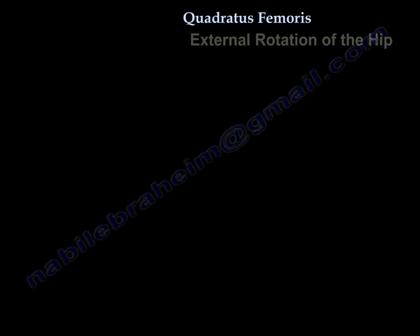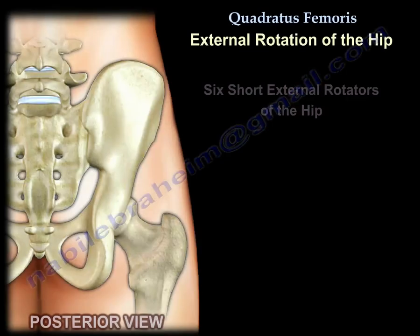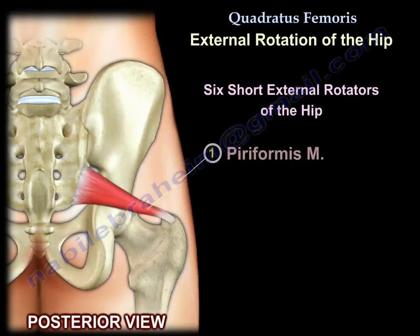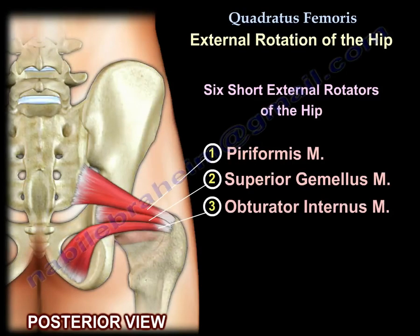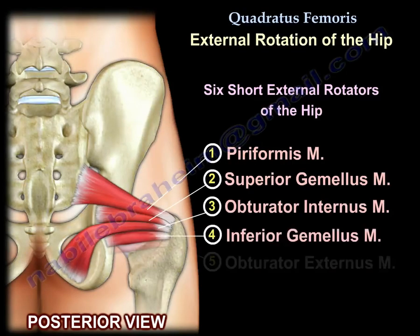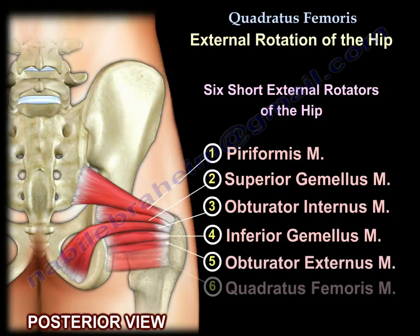In this diagram you can see the six short external rotators of the hip, which include the quadratus femoris muscle, and the order of their arrangement.